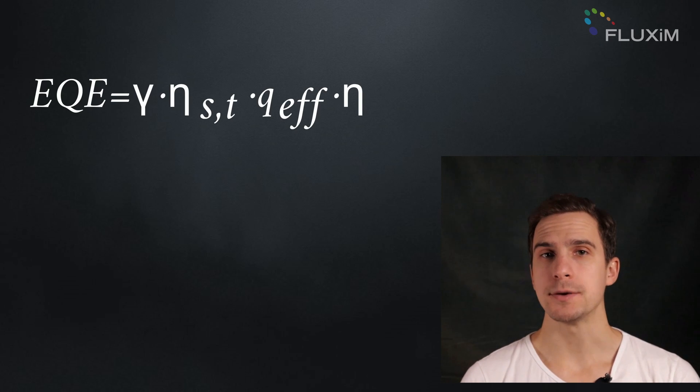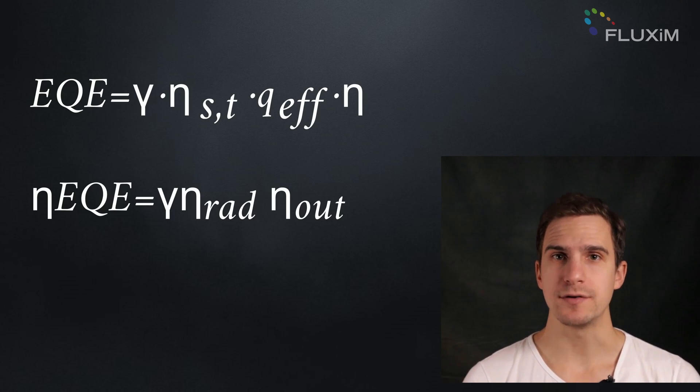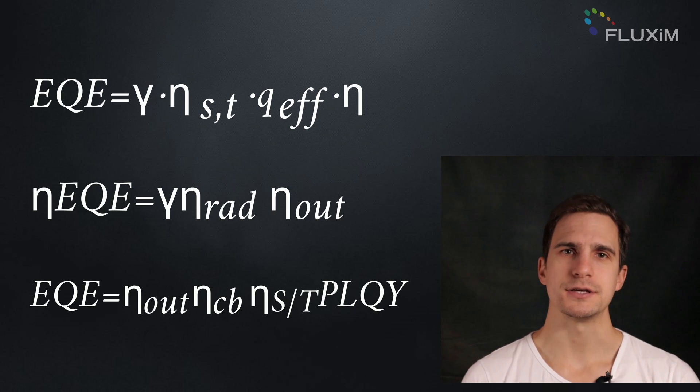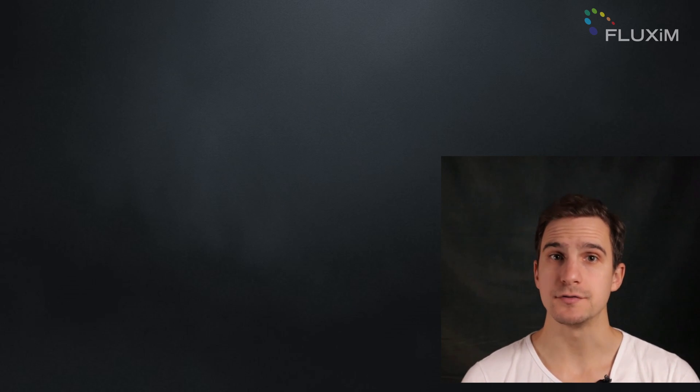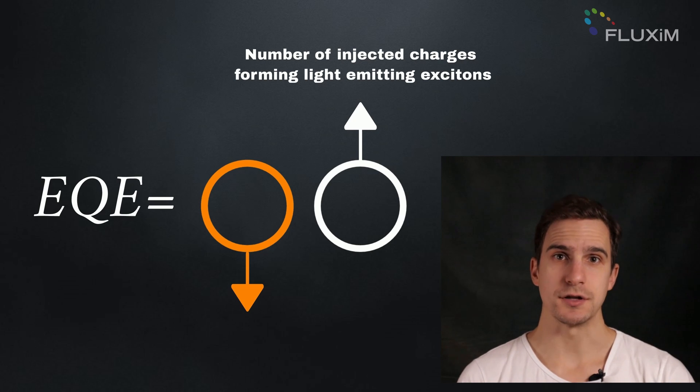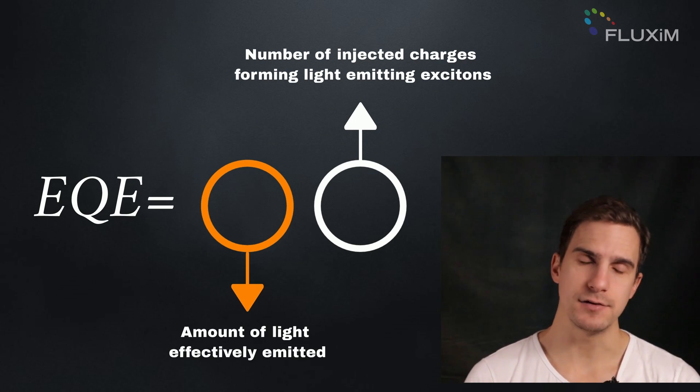The EQE can be written in various equivalent forms. Regardless of their complexity, it can be expressed as a product of two factors: the number of injected charges that form light-emitting excitons, and the amount of light effectively emitted.